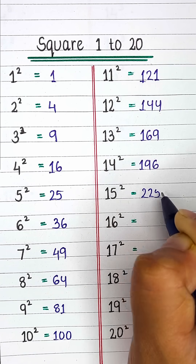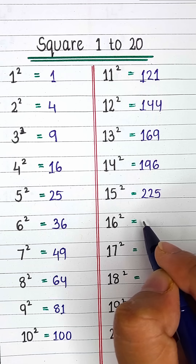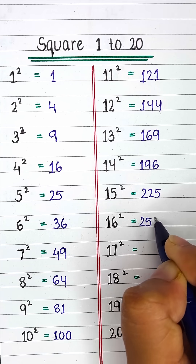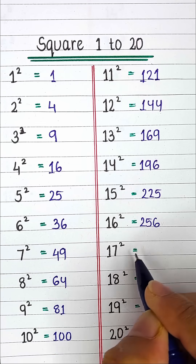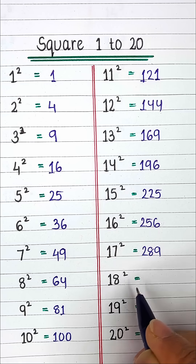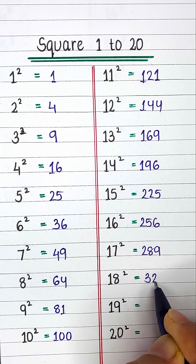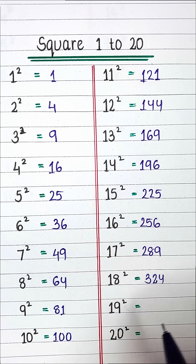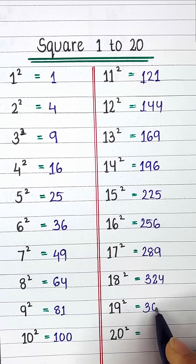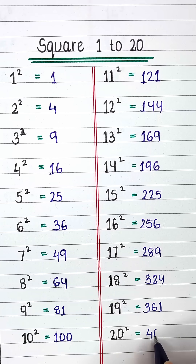Square of 16 is 256. Square of 17 is 289. Square of 18 is 324. Square of 19 is 361. And finally, Square of 20 is 400.